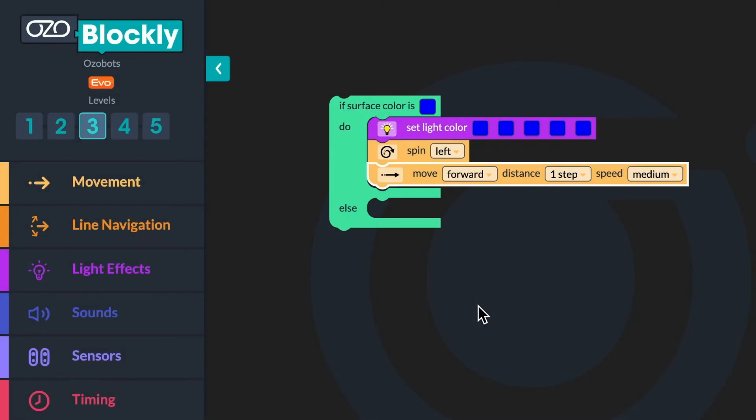Time to complete the conditional in the program. If the conditional is true and the bot senses the color blue, then it will turn its lights blue, spin left and move forward one step. But what if the condition is false and the bot does not sense the color blue? If the bot does not sense the color blue, it will turn its lights off and move forward two steps.